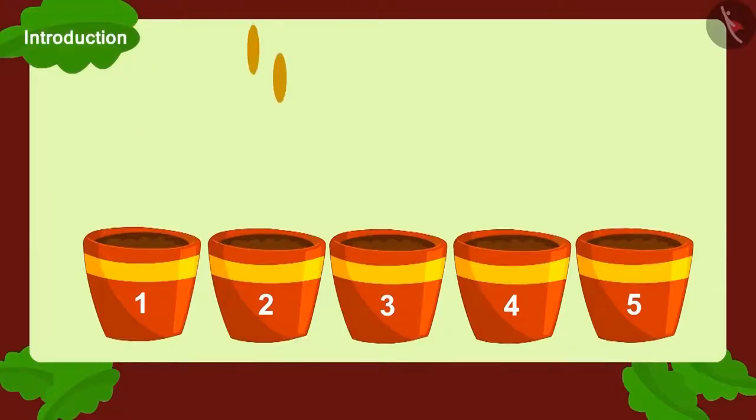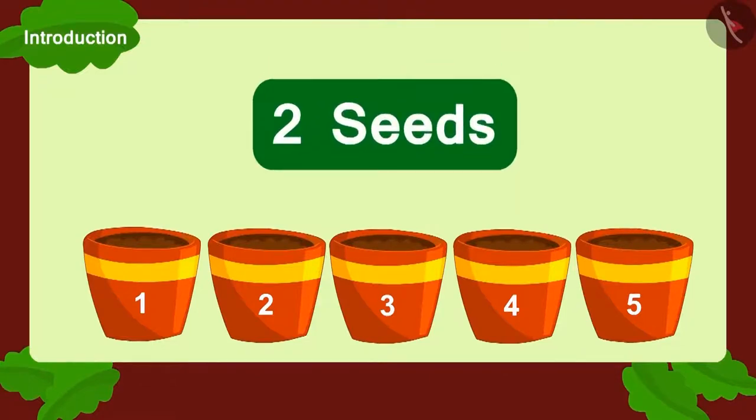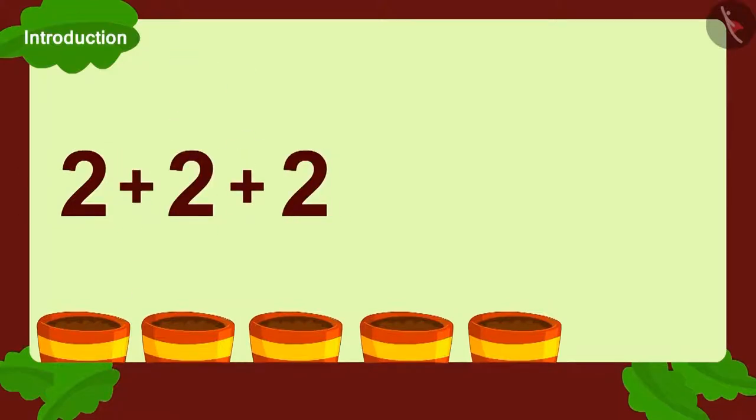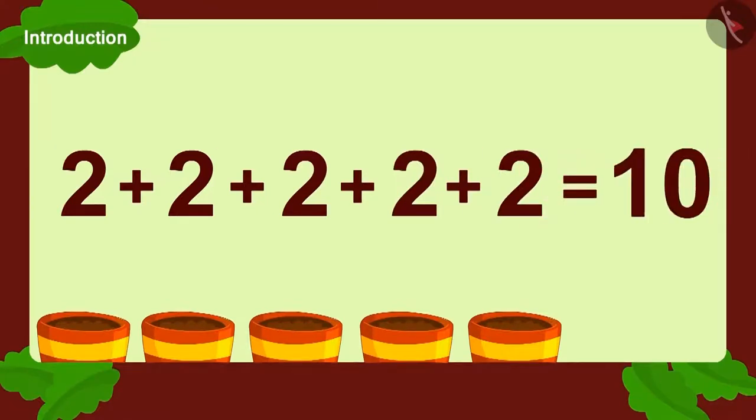In all, Golu planted seeds in five pots. And how many seeds did he plant in each pot? Two seeds. Let's find out the total number of seeds by adding these seeds. Add two to two. Again add two. Again add two. And finally, one more. How many seeds did we get? Ten seeds.